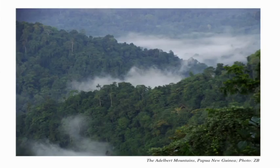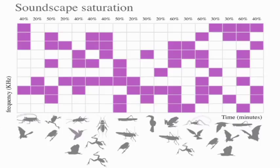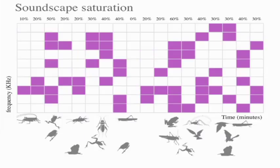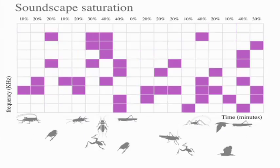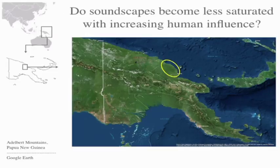I'll be calling this communication space the soundscape. This acoustic niche hypothesis is something that we as ecologists and conservation scientists have to take advantage of. If you think about a tropical rainforest like this one in the Edelbert Mountains of Papua New Guinea, its soundscape is really saturated. On this cartoon, time is on the x-axis and frequency on the y-axis. Every pink square means that particular frequency-time window has some animal calling in it. But when you start disturbing the forest — hunting some animals away — the soundscape might become less and less saturated. This is exactly what we decided to test.